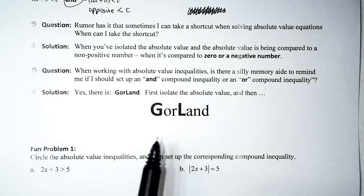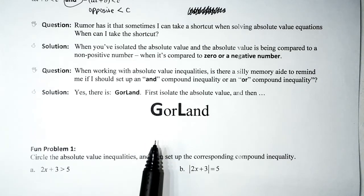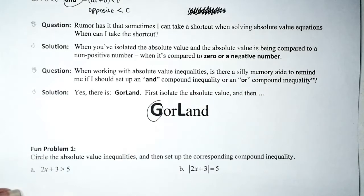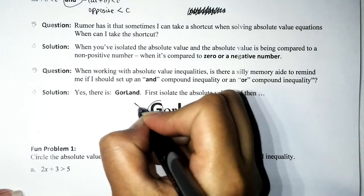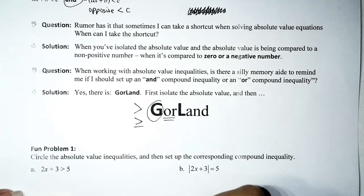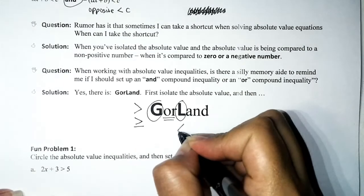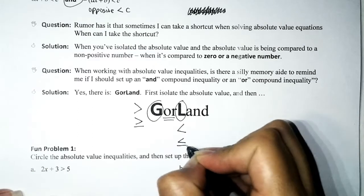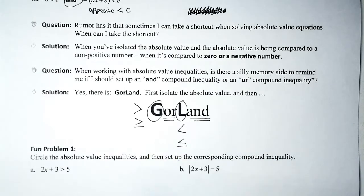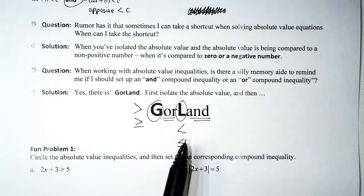GORLAND is something silly I made up to help with absolute value inequalities. The G is for greater than — so if we have greater than or greater than or equal to, it's an OR kind of problem. If we have less than or less than or equal to, it's an AND kind of problem. The sillier the memory aid, the more likely it will stick.